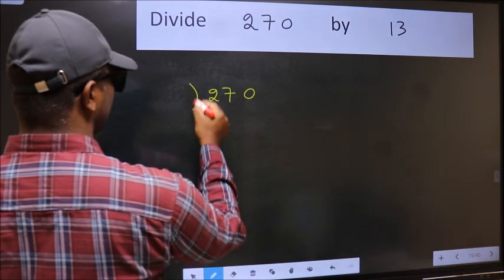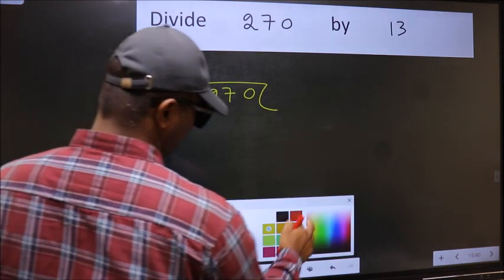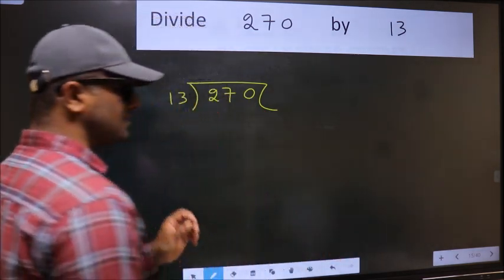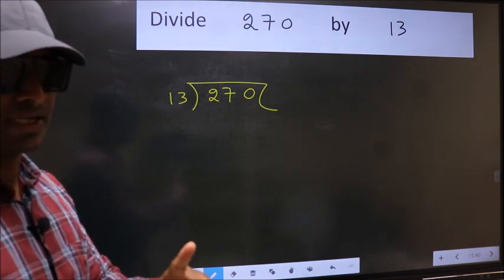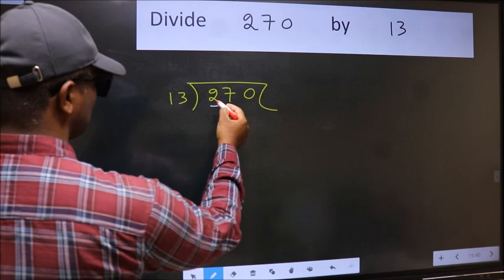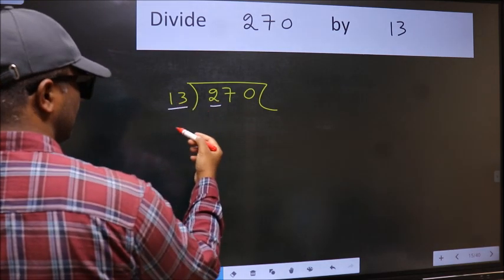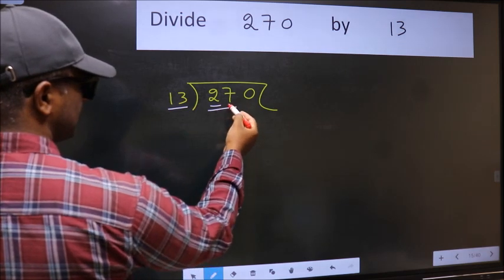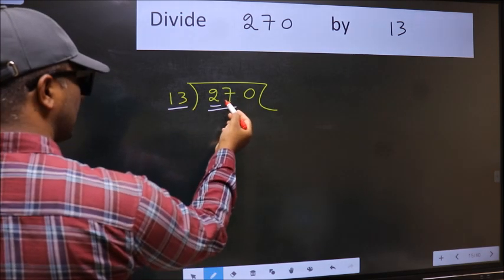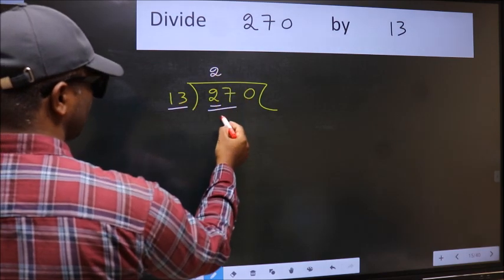270 and 13 here. This is your step 1. Next, here we have 2 and here 13. 2 is smaller than 13, so we should take two numbers, 27. A number close to 27 in 13 table is 13 times 2, 26.